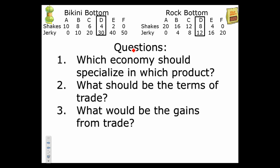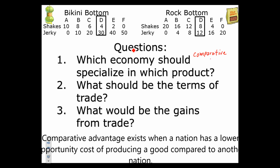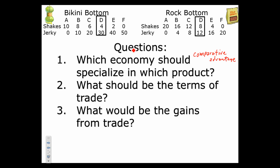Before we start, let's think about which economy should specialize in which product. In order to answer that, we have to come up with comparative advantage. Nations will trade based on comparative advantage — whoever has the lowest opportunity cost in producing shakes will produce shakes, and whoever has the lowest opportunity cost in producing jerky will produce jerky. The terms of trade have to be mutually beneficial; otherwise there's no incentive to trade. For gains from trade, we figure out what they were producing before versus after trade.